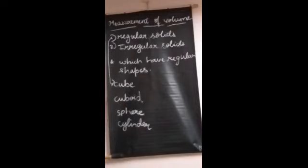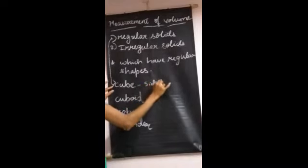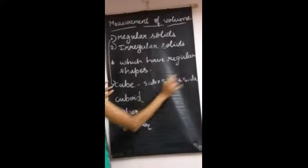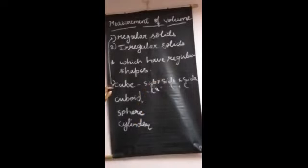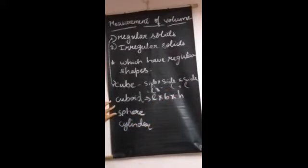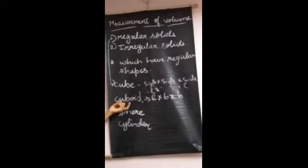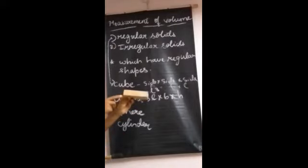You can note down in your books. How to find the volume of a cube? Volume of a cube is side × side × side, that is length × length × length — L³. And how to find the volume of a cuboid? Length × breadth × height. In a cube, all sides are equal, so it is L³ as a three-dimensional object. For a cuboid, it is length × breadth × height.